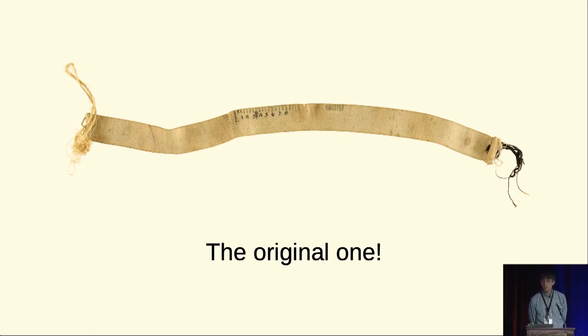By the way, this is the original Gerber variable scale. Joe Gerber actually made this out of the elastic band in his pajama pants. He ripped it out and drew a little scale on it and you can stretch it out.